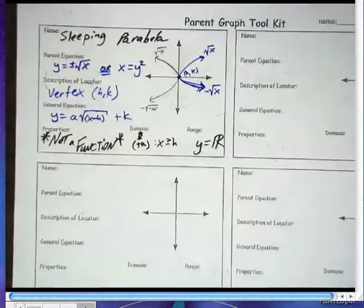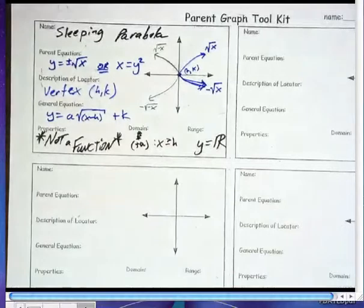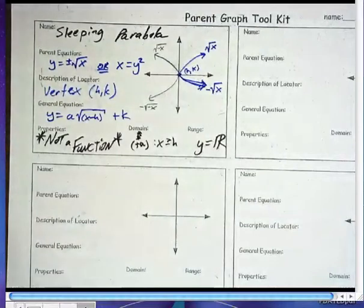You can add that to your list and everything that we know about it, and so we've got the sleeping parabola and the four other from the front, and you should have almost complete parent graph toolkit. We'll continue to complete this when we add other functions.